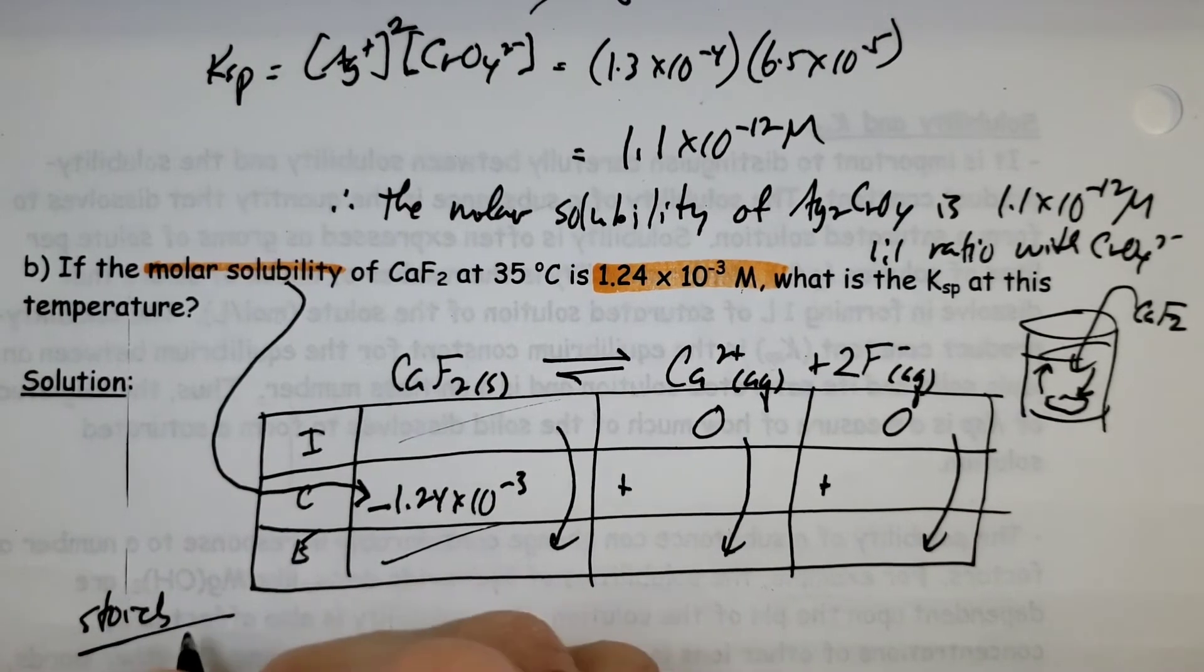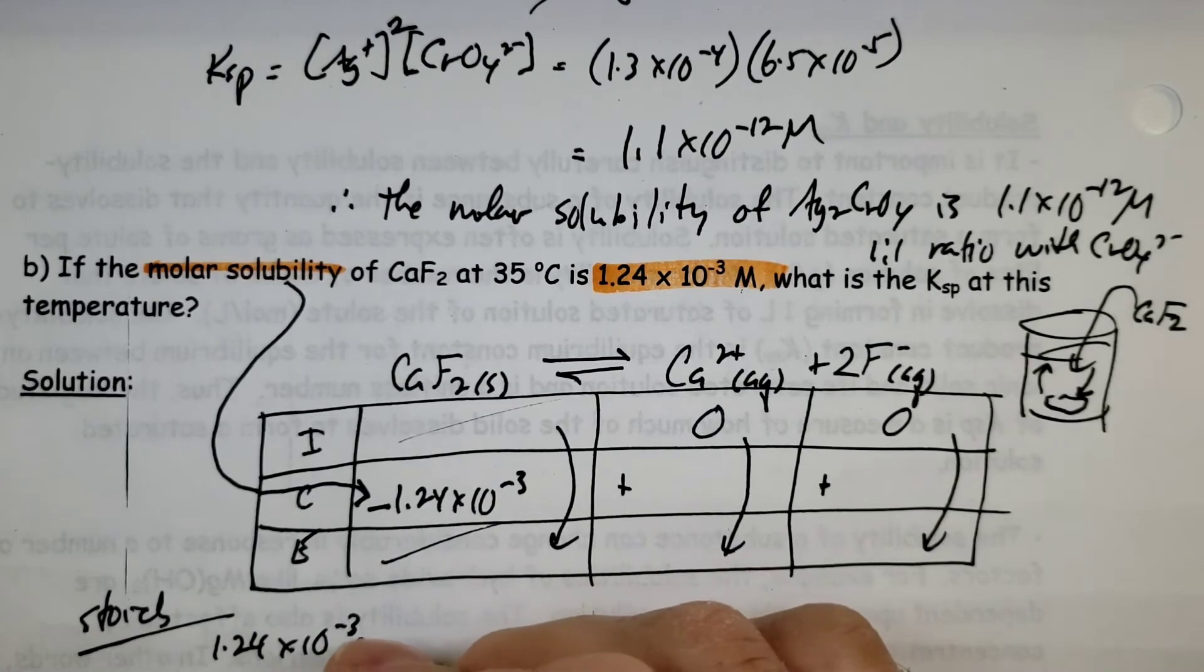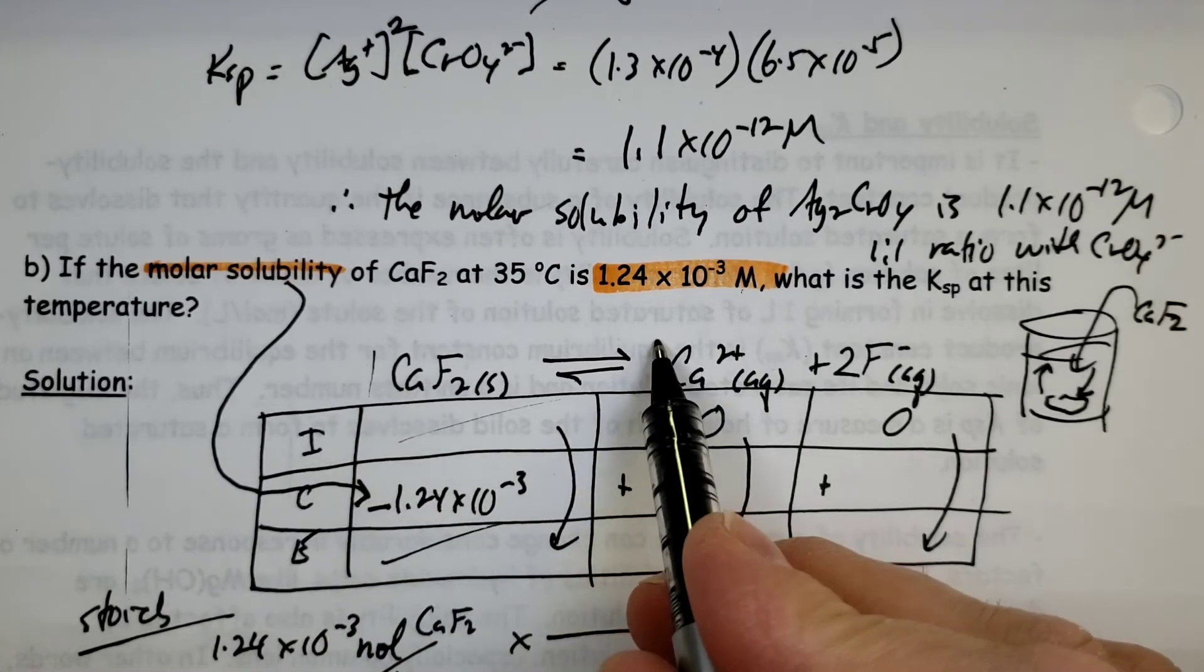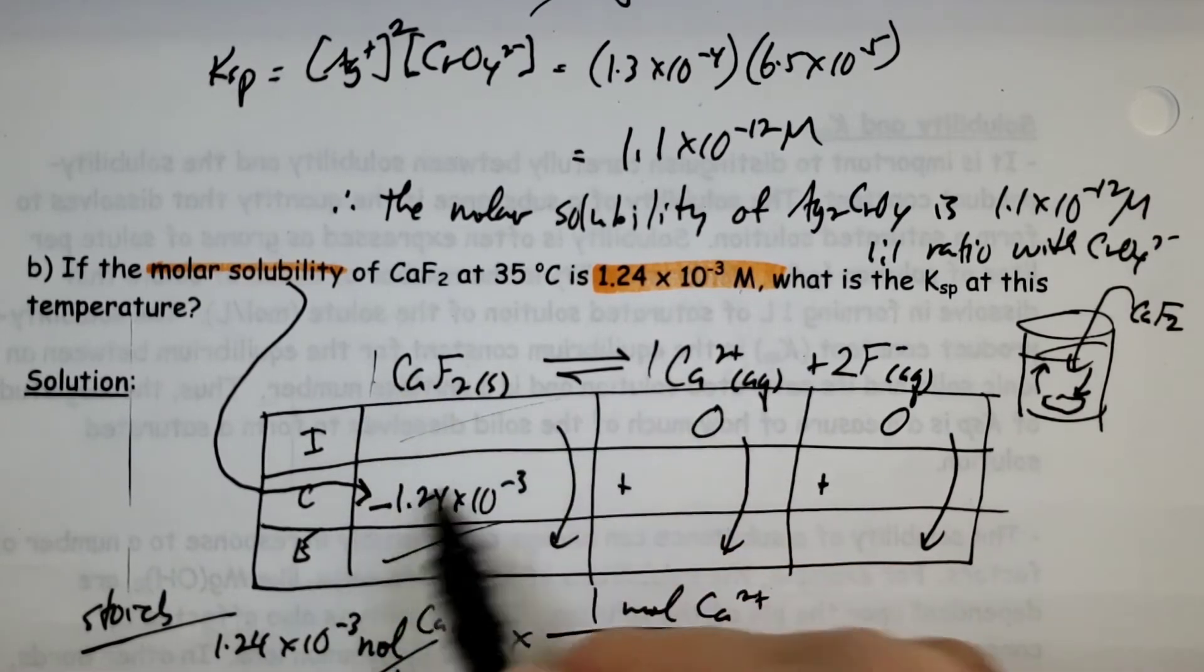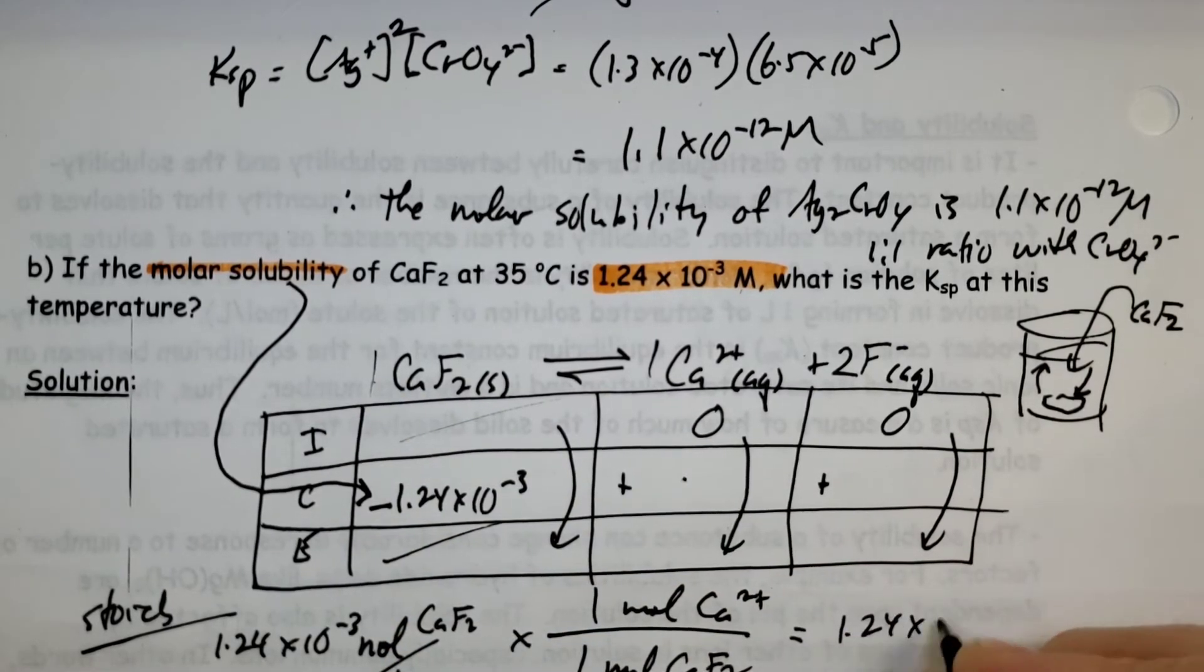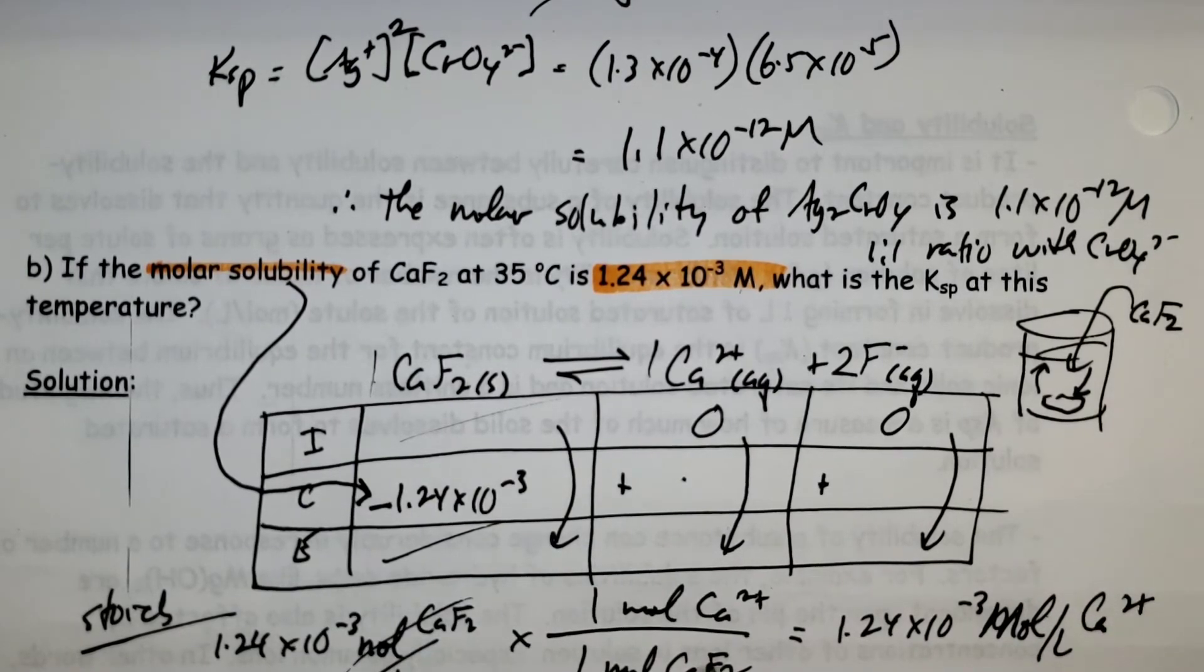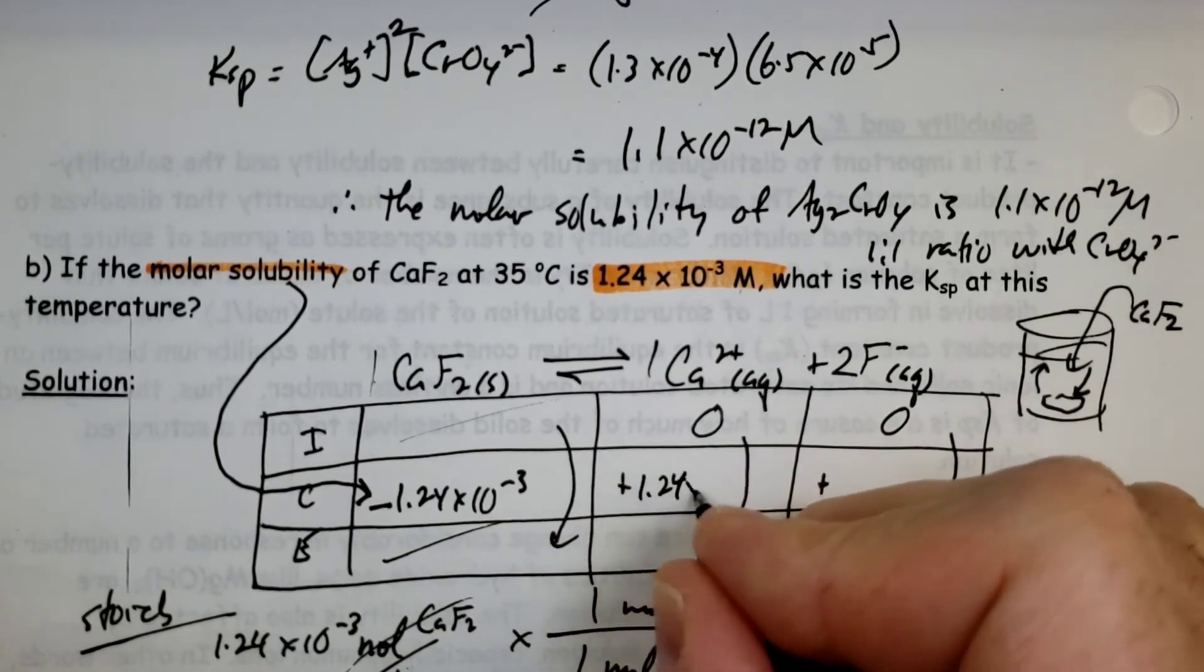If I don't worry about the negative, that just simply tells me that it's getting used up. So if I have 1.24 times 10 to the minus 3 moles per liter of calcium fluoride, I can use the stoich. One makes one. One mole of calcium fluoride makes one mole of calcium. So 1, 1, 1, 1, 1.24, 1.24. It's going to be the same thing, because it's one to one ratio. Moles of calcium fluoride, moles of calcium fluoride, then I'm left with moles of calcium per liter. So 1.24 times 10 to the minus 3.